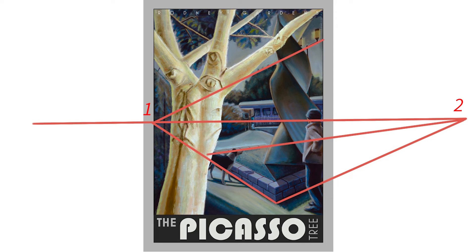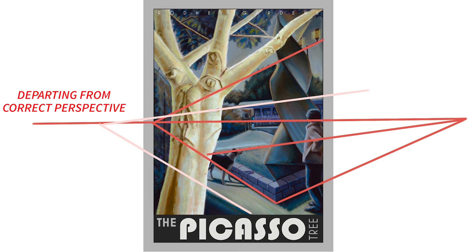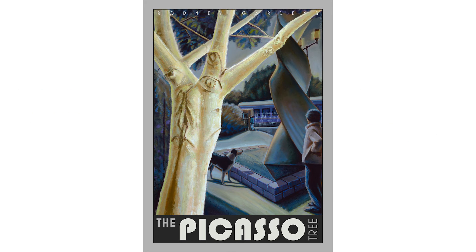Going back to the painting, we have one and two point perspective, but let me show you where this is incorrect. See the lighter lines. Because this was an angular painting, I moved the perspective around to help reinforce the symmetry of the artwork.